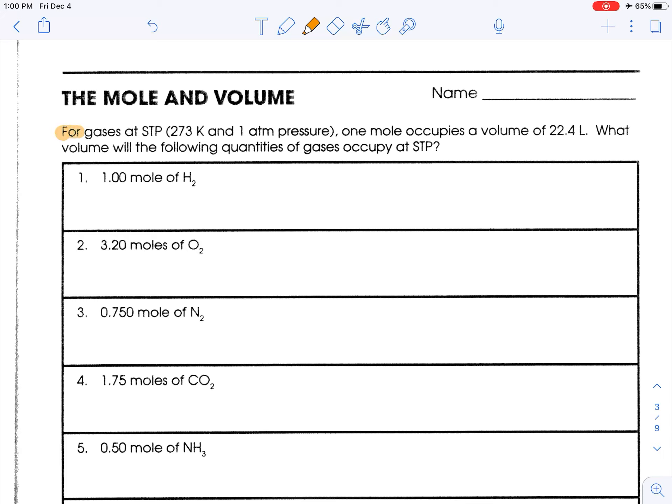For gases at STP, which is standard temperature and pressure, 273 kelvin and one atmosphere pressure, one mole occupies a volume of 22.4 liters, known as the molar quantity. What volume will the following quantities of gases occupy at STP? Technically, if it didn't say at STP, none of these would work, because that conversion factor only works when those conditions are met for gases.